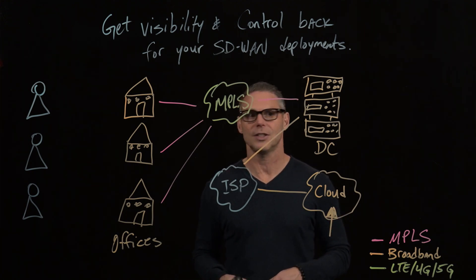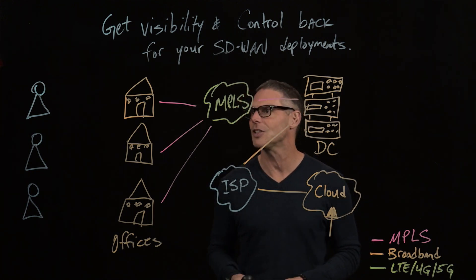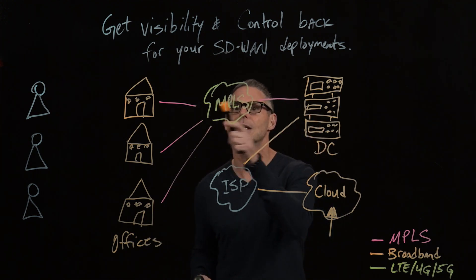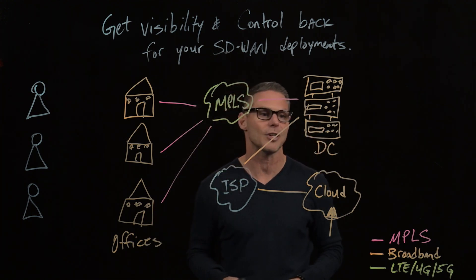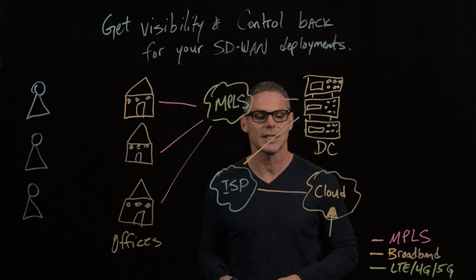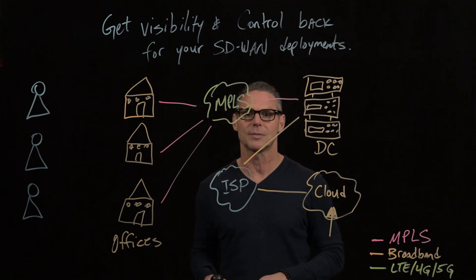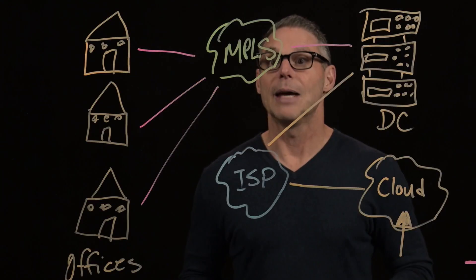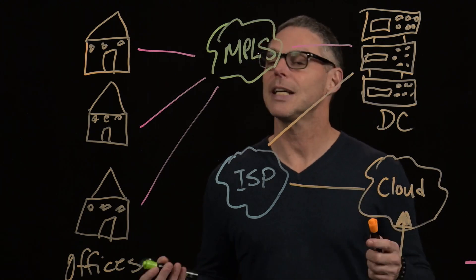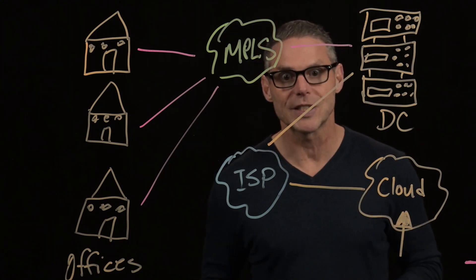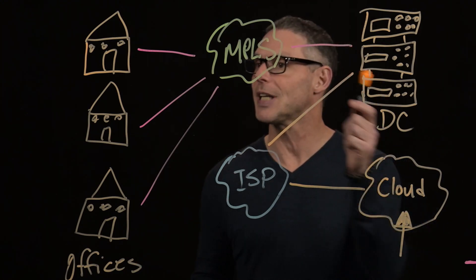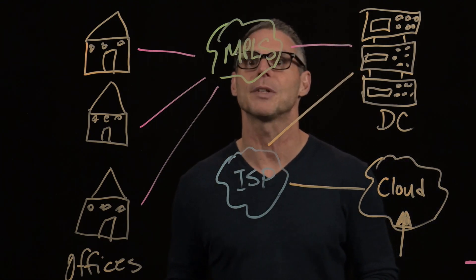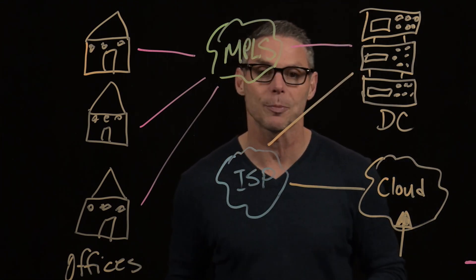I've drawn out what is a normal network topology back in the day. You have a data center, you have dedicated MPLS circuits out to the branch offices, the data center has an internet connection, maybe even out to a cloud provider as well. And with this architecture, back in the day, you had full visibility and control. These are dedicated circuits — you know every single packet, every single route that goes across them, because it's what you're paying for.